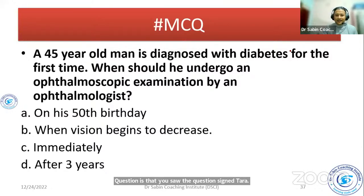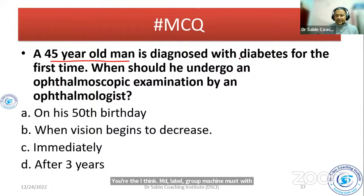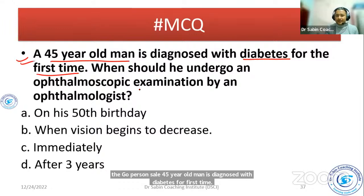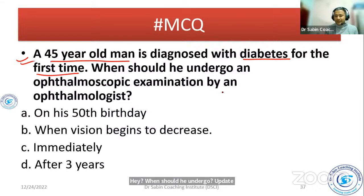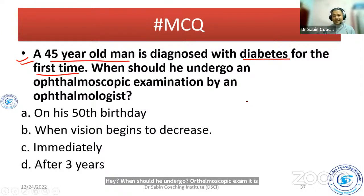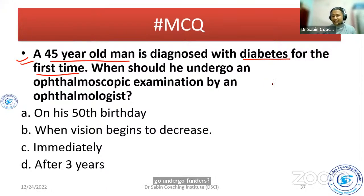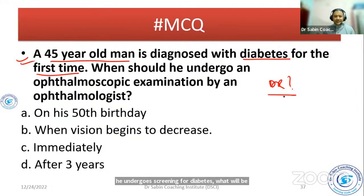A 45-year-old man is diagnosed with diabetes for the first time. When should he undergo ophthalmoscopic examination by an ophthalmologist? That means, when should he undergo screening for diabetic retinopathy? What will be the best answer?